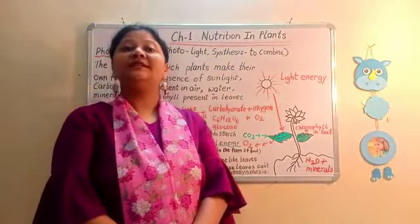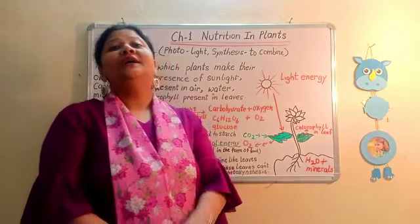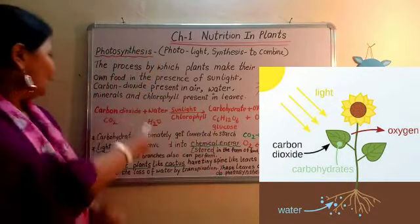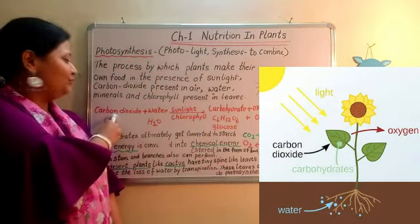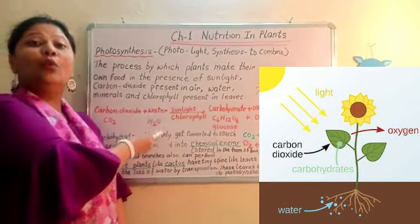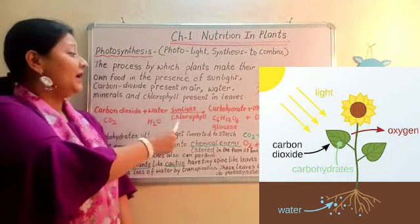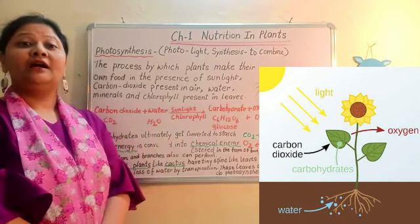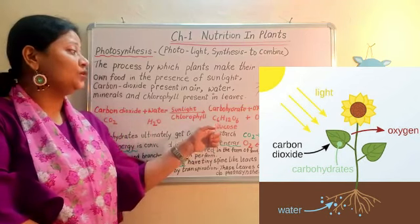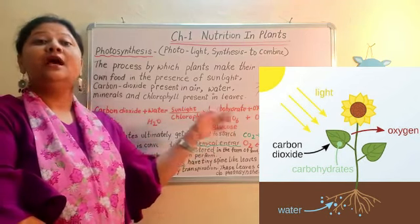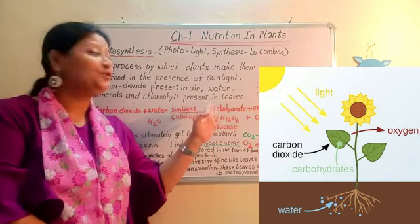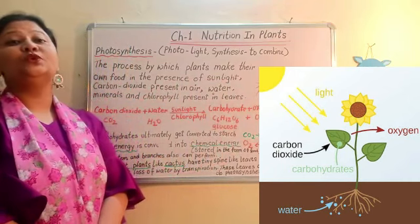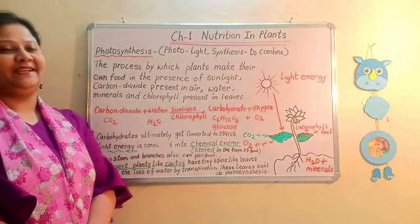Photosynthesis can also be explained in the form of a chemical reaction: carbon dioxide (CO₂) from the air, when combined with water (H₂O), produces carbohydrate — specifically glucose (C₆H₁₂O₆). Along with the carbohydrate, oxygen (O₂) is also released into the air during the process of photosynthesis.